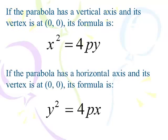Just to recap: vertical means up or down, and that's x squared. Horizontal means opening right or left, and that's y squared. P is that distance from the focus to the vertex, or from the vertex to the directrix. These are the base equations.